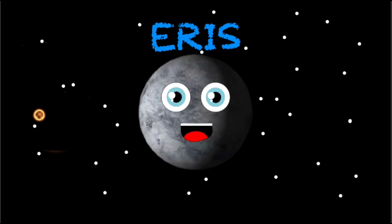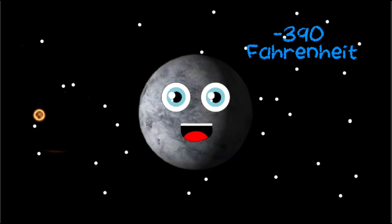My name is Eris. I am a dwarf planet, the furthest dwarf from the sun the humans found yet. Minus 390 is my average degree. If you made it to my surface, you'd probably freeze.